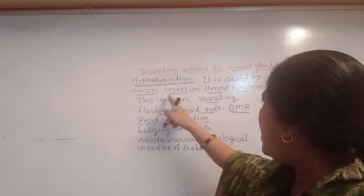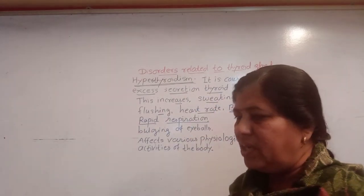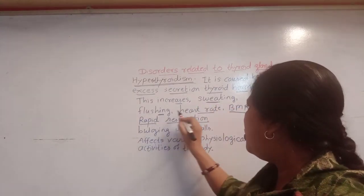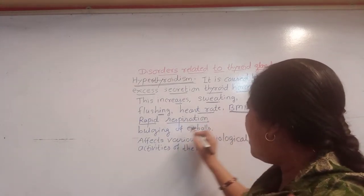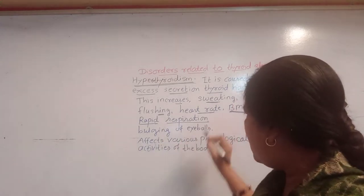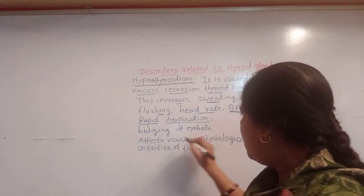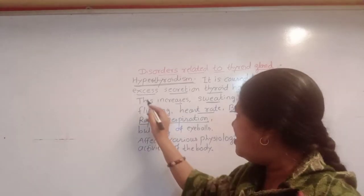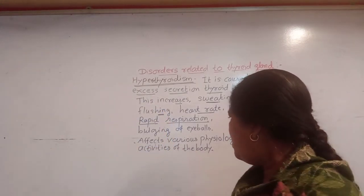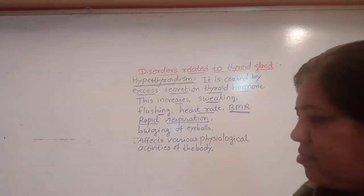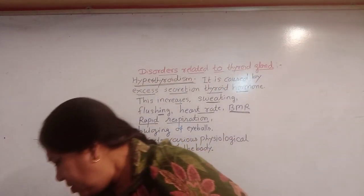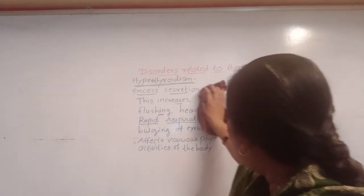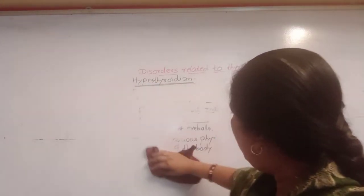Hyperthyroidism is always caused due to excess secretion of thyroid hormone. When there is excess secretion of thyroid hormone, there is an increase in sweating, flushing, and heart rate. Graves disease — that is, exophthalmic goiter — is the classic example of hyperthyroidism.